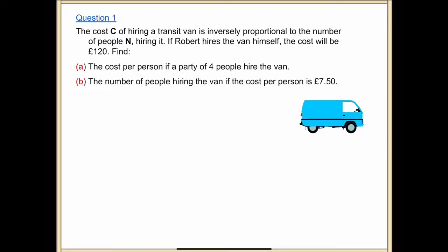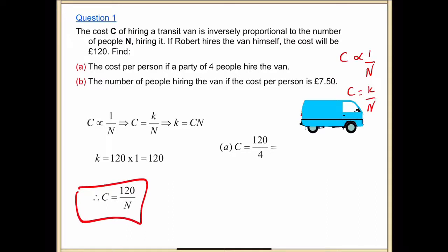The cost C of hiring a transit van is inversely proportional to the number of people N. C equals k over N. That is the hardest thing you've got to do. Then, after that, it's simple substitution. Your two answers are 30 and 16.